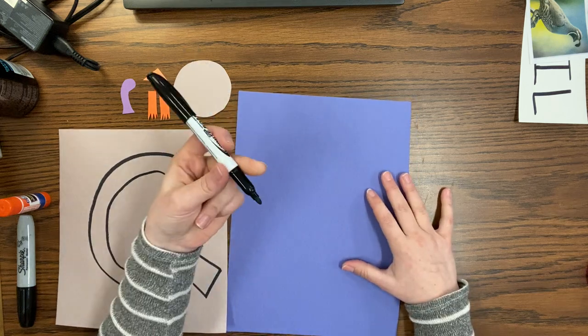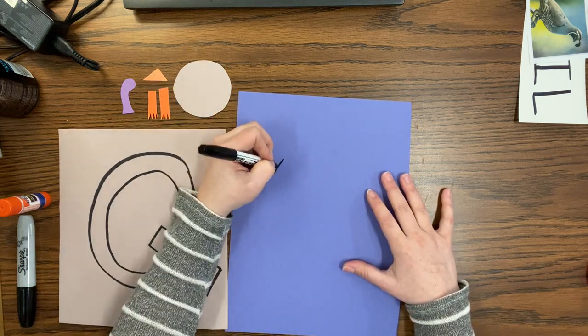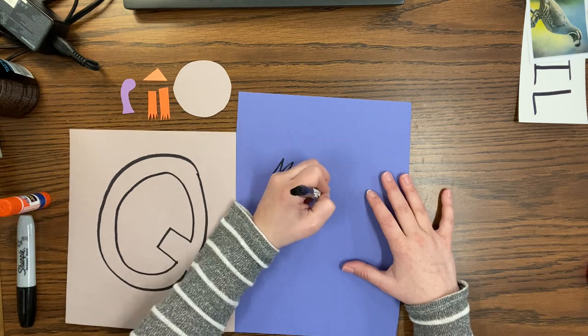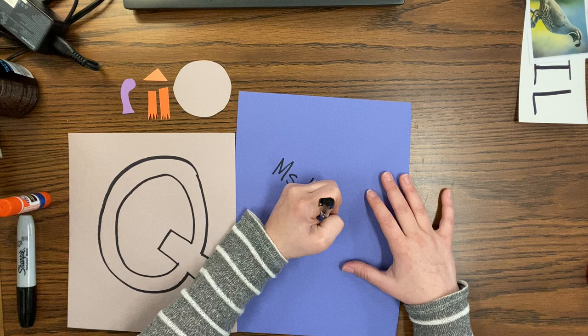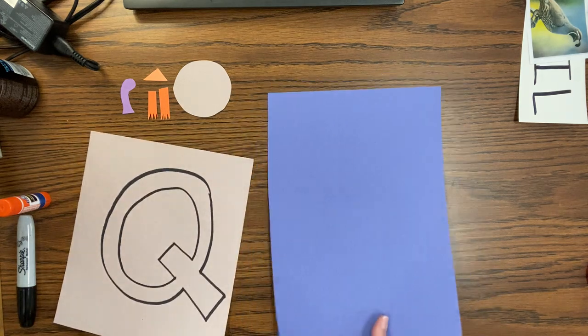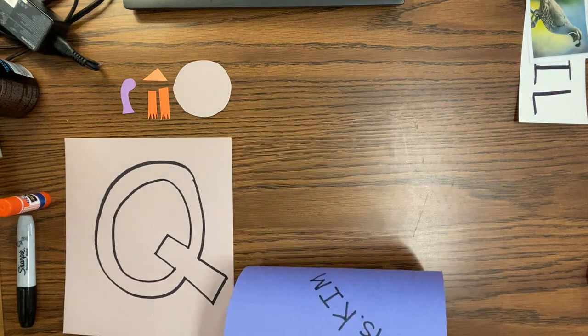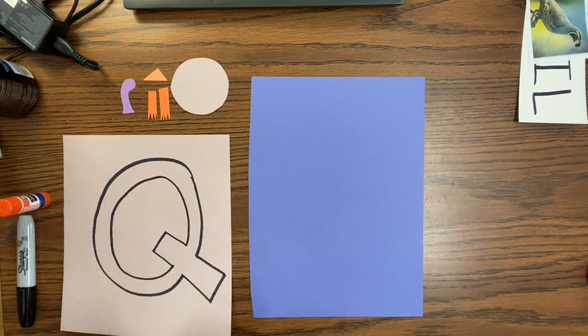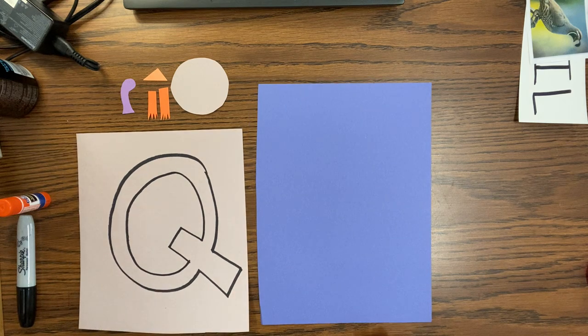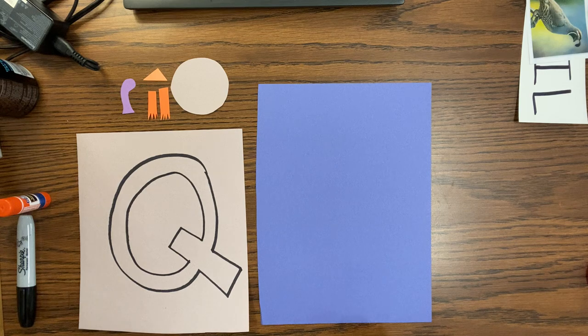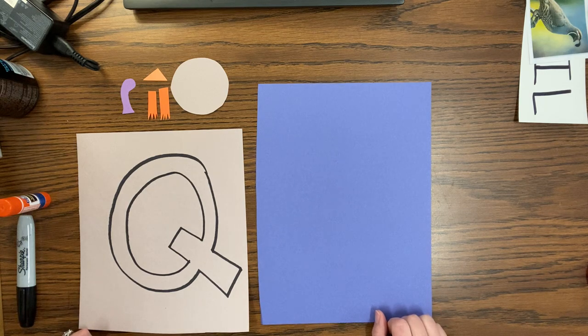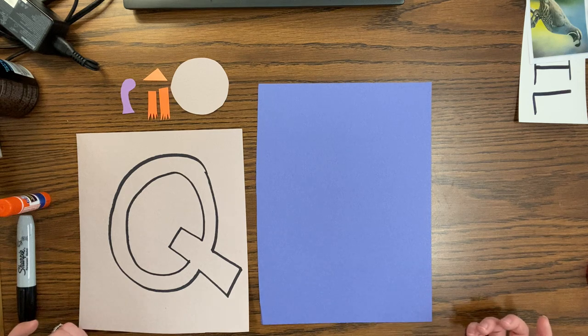So I'm going to take something to write with and write Miss Kim. And then I'm going to flip it over because Miss Kim is going to be on the back of my paper. Your name will be on the back of your paper. Once you write your name, if you need to pause it so you can have time to write your name, that's okay. You can just pause it, write your name, and then push play again.